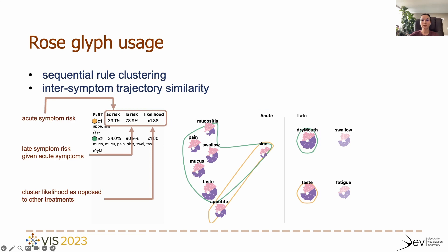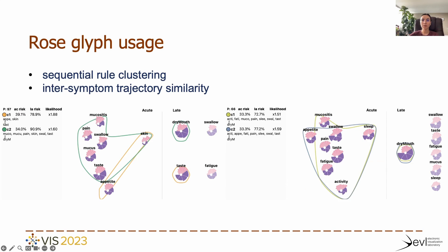The legend on the left shows for each cluster prediction scores, interpreted as relevant clinical risk scores. The low opacity symptoms in the late stage show common late symptoms that did not occur with enough frequency to be considered by the model. Third, the rose glyph leverages symptom comparison for multiple treatments. We can see two treatments that both have two symptom clusters, and that dry mouth is predicted in late in both cases, but the second treatment shows higher late ratings.